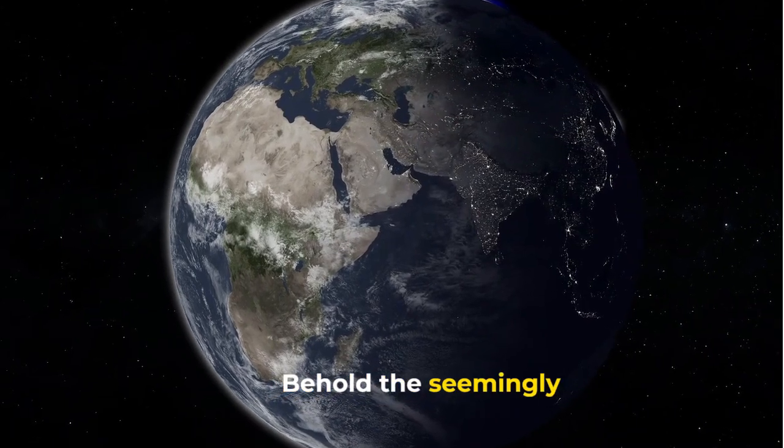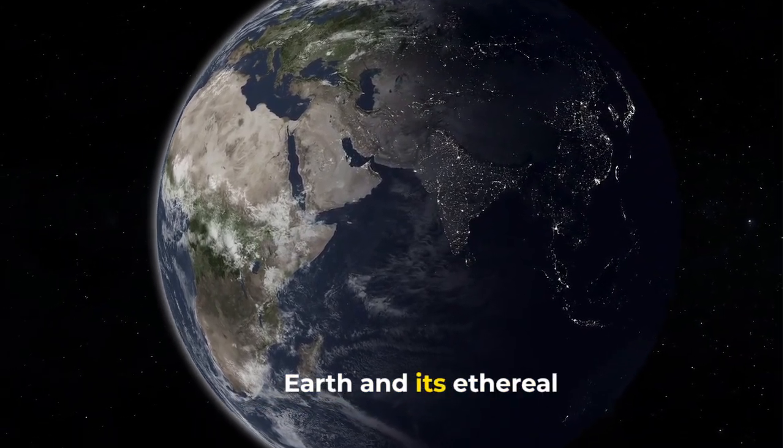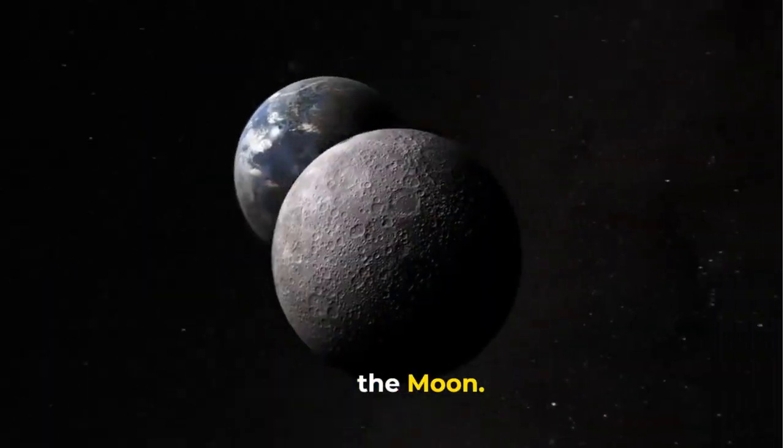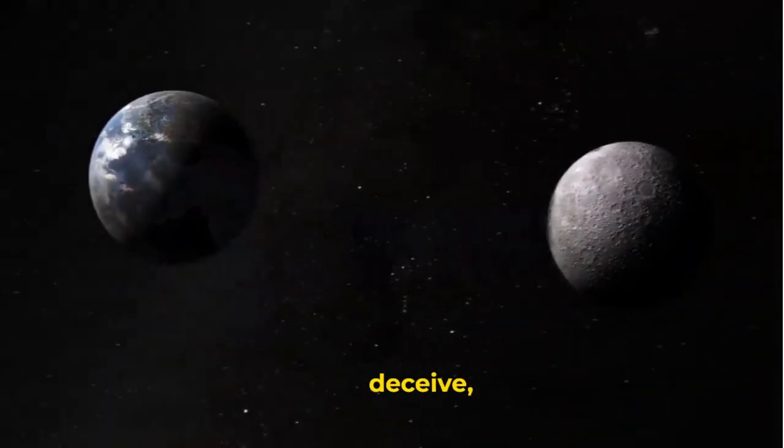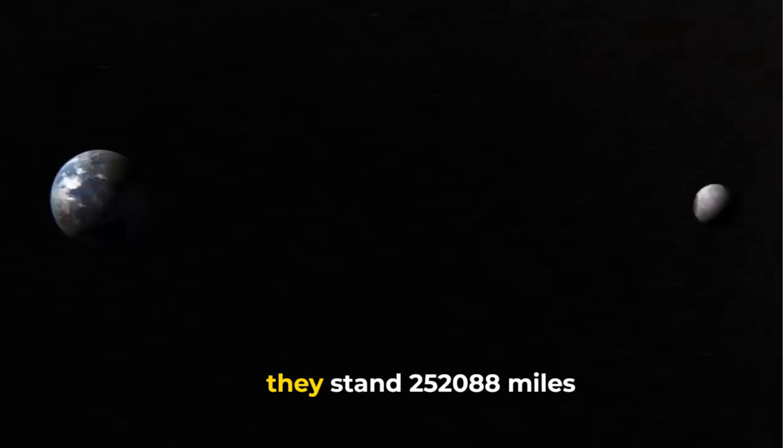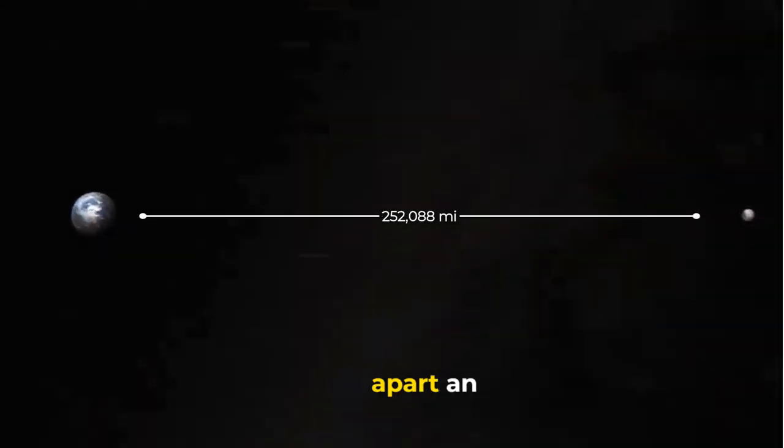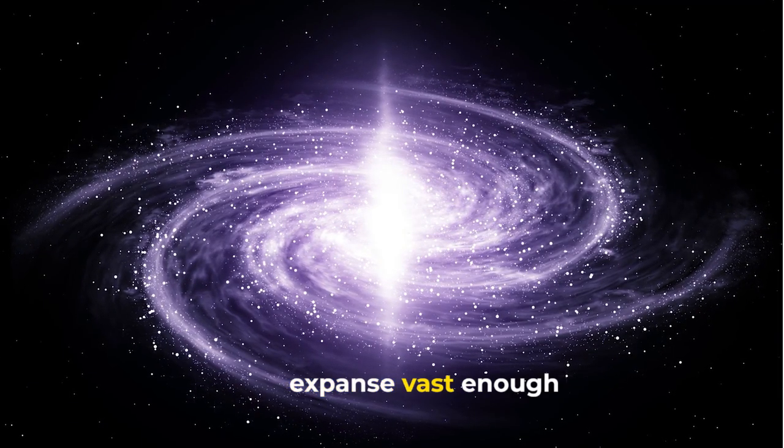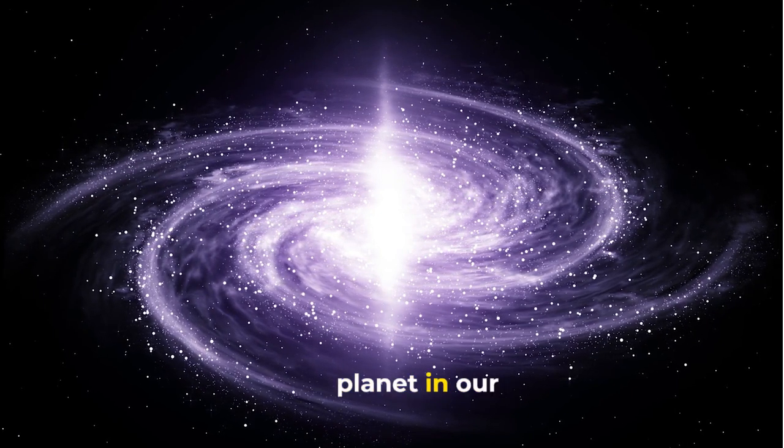Behold the seemingly modest distance between Earth and its ethereal companion, the Moon. A mere glance might deceive, for at their farthest points they stand 252,088 miles apart. An expanse vast enough to encompass every planet in our solar system.